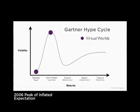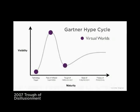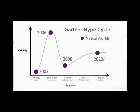Next comes a peak of inflated expectations, when the technology is adopted with high expectations of success. In 2006 the popularity of virtual worlds peaked. Then followed the trough of disillusionment, when they found out that their expectations would not be met. This happened early in 2008.